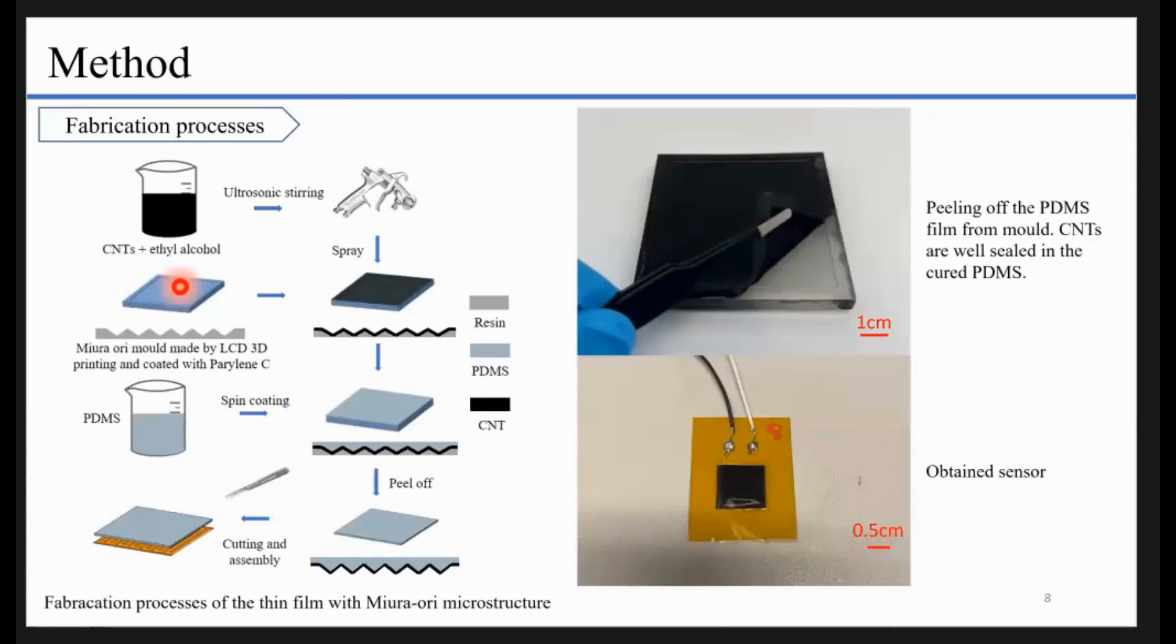Here comes to the fabrication process, how we make the sensor. At the beginning, we need to prepare two things. First is the solution, the CNT solution with lithium alcohol. We mix them together and use ultrasonic steering to mix them well. Then we prepare the Miura-ori mold using 3D printing. When we have these two things, we use a spray coating process to coat the solution to the mold uniformly.